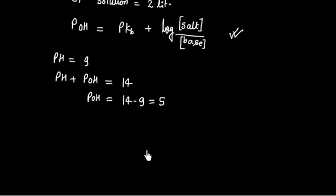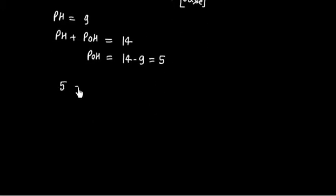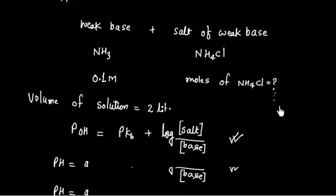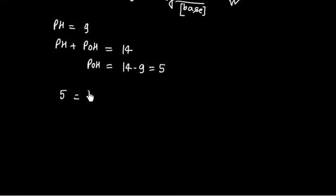Now we can use this expression, that is POH equals PKB. For ammonia PKB is given, that is 4.74, plus log salt by base.